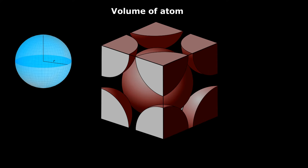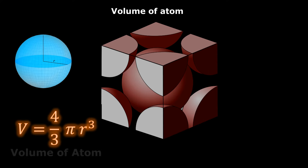So the number of atoms in this unit cell is equal to two. If we consider the atomic structure to be spherical in shape, then the volume of the atom will be equal to the volume of a sphere, which is equal to 4/3 π r³. So the volume of the atom is equal to 4/3 π r³.